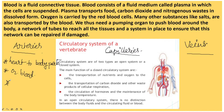Veins carry blood from different parts of the body to the heart. Veins carry deoxygenated blood. Except for the pulmonary artery, all other arteries carry oxygenated blood — only the pulmonary artery carries deoxygenated blood. Similarly, the pulmonary vein is the only vein that carries oxygenated blood; all other veins carry deoxygenated blood. Valves are present in veins, and veins are superficial.